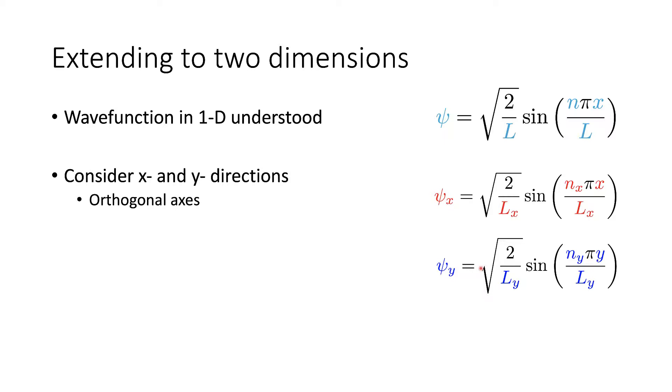These axes are what we call orthogonal. They have absolutely nothing to do with each other. Orthogonal is an all-encompassing word which can mean perpendicular under some circumstances. In this case, yes, they are perpendicular. They have no component of each other in the direction of the other, so we can say they are orthogonal.